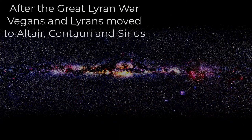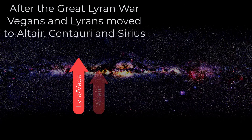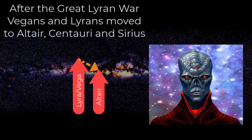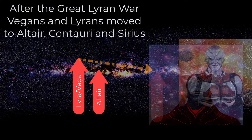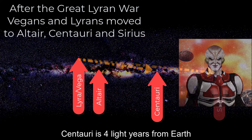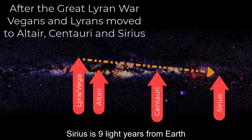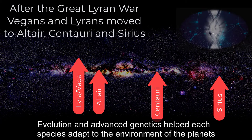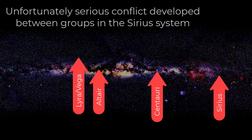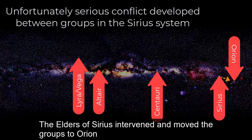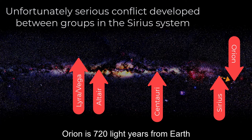After the Great Lyran War, Vegans and Lyrans moved to Altair, Centauri and Sirius. Altair is 17 light-years from Earth, Centauri is 4 light-years from Earth, and Sirius is 9 light-years from Earth. Evolution and advanced genetics helped each species adapt to the environment of the planets. Unfortunately, serious conflict developed between the groups in the Sirius system. The elders of Sirius intervened and moved the groups to Orion. Orion is 720 light-years from Earth.